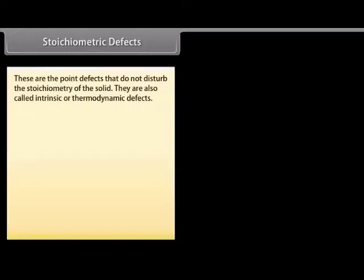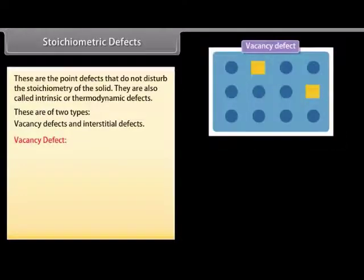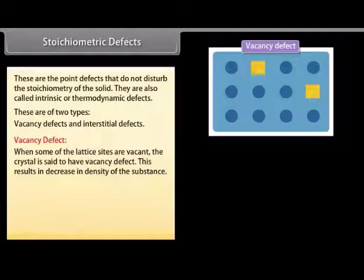Stoichiometric defects are point defects that do not disturb the stoichiometry of the solid. They are also called intrinsic or thermodynamic defects. These are of two types: vacancy defects and interstitial defects. Vacancy defect: when some of the lattice sites are vacant, the crystal is said to have vacancy defect. This results in a decrease in density of the substance.